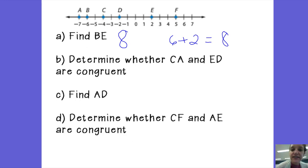Part B. Determine whether segment CA and segment ED are congruent. So CA, C is on the right side and A is on the left side. It doesn't matter. There's still three spaces in between C, which is at negative 4, and A, which is at negative 7. So 1, 2, 3. So the length of CA is 3.